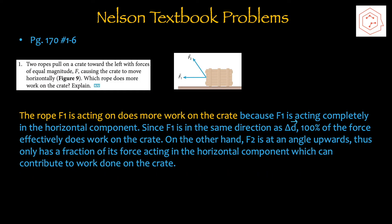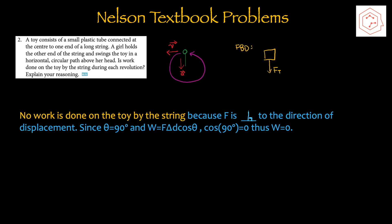Now let's move on to Nelson textbook problems, starting with number 1 on page 170, section 4.1. Two ropes pull on a crate toward the left with forces of equal magnitude F — which rope does more work? The rope with F1 does more work because F1 acts completely in the horizontal component, the same direction as the displacement, so 100% of the force effectively does work. F2 is at an angle upwards diagonally, so only a fraction of that force acts horizontally, meaning only a fraction of the work is done.